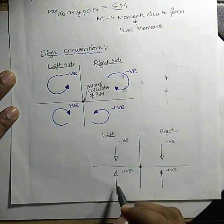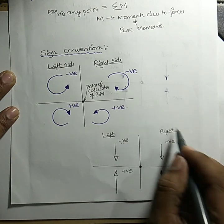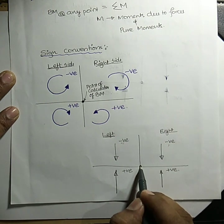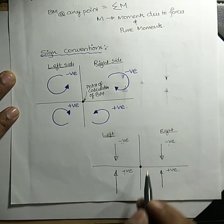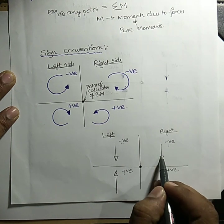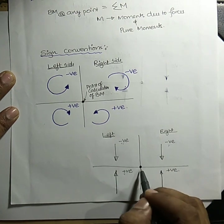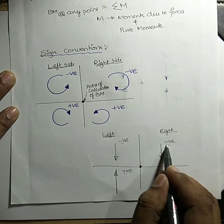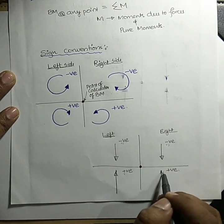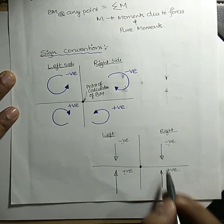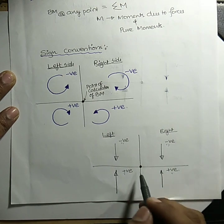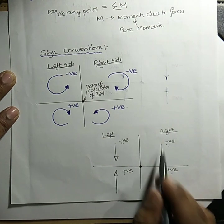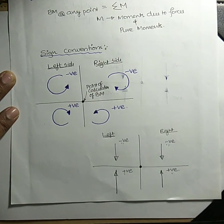For example, with respect to the point, a left-side force making an anticlockwise direction is negative — that is left side anticlockwise is negative. A left-side force making a clockwise movement is positive. Right side clockwise is negative. Right side anticlockwise is positive. So both sides downward is taken as negative and both sides upward is automatically positive.